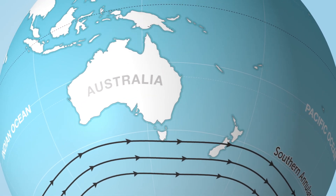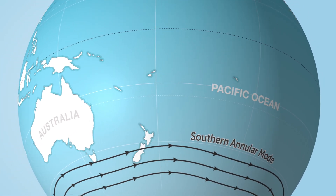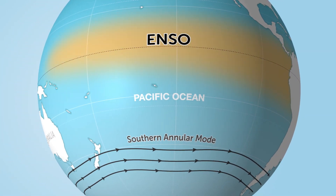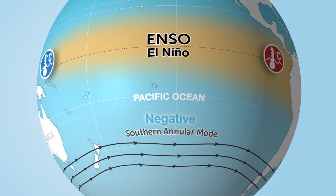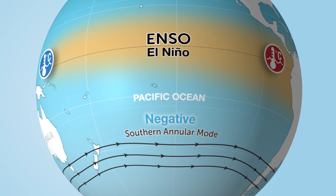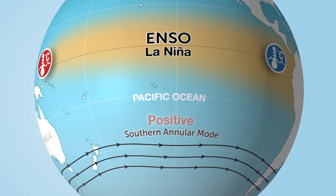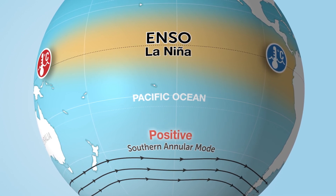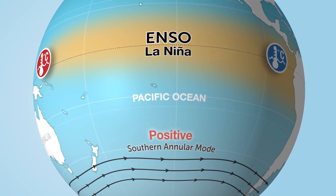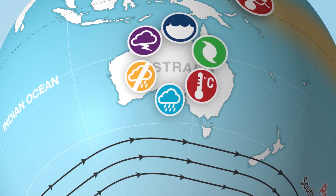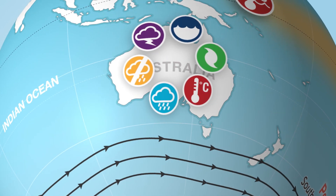The Southern Annular Mode is often related to ENSO events. In El Niños, it tends to be more negative, and in La Niña it is generally more positive. This can reinforce some of the ENSO impacts, particularly in the summer months.